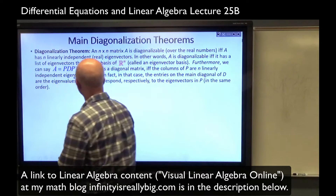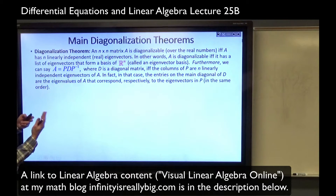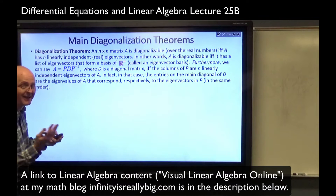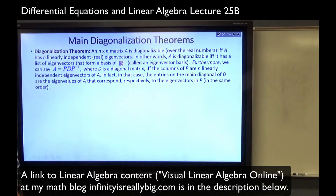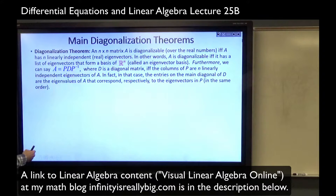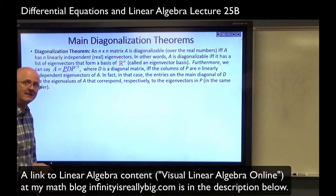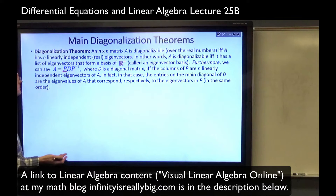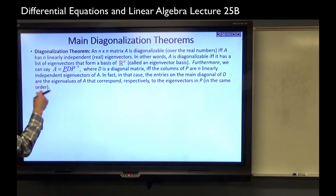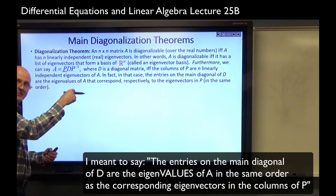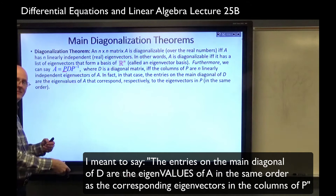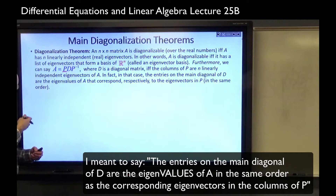Furthermore, we can say that A is similar to a diagonal matrix — that's what diagonalizability means. A is similar to a diagonal matrix means there's an invertible matrix P and a diagonal matrix D so that A equals P times D times P inverse. When we write it this way, P has columns that are eigenvectors of A, and linearly independent ones, so that P is invertible by the invertible matrix theorem, and you put its inverse on the right. The entries on the main diagonal of D are going to be the corresponding eigenvalues in the same order.